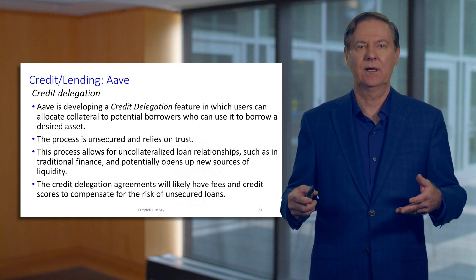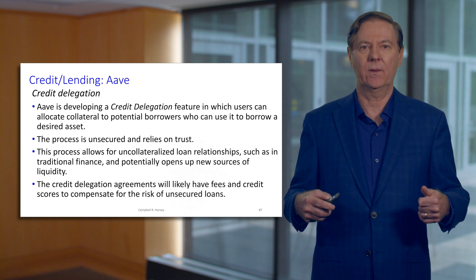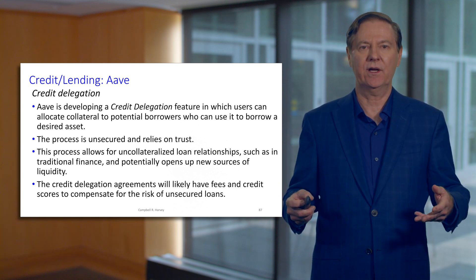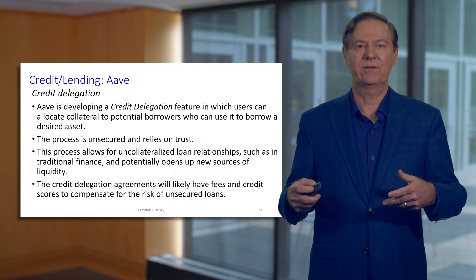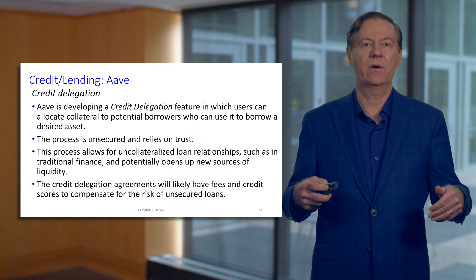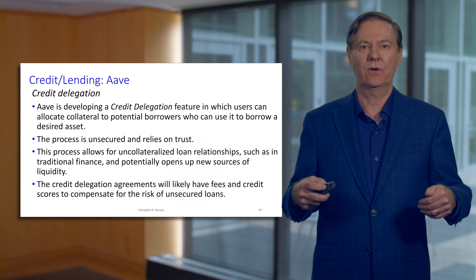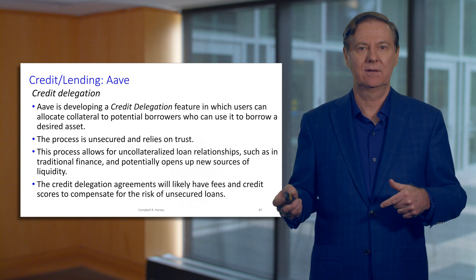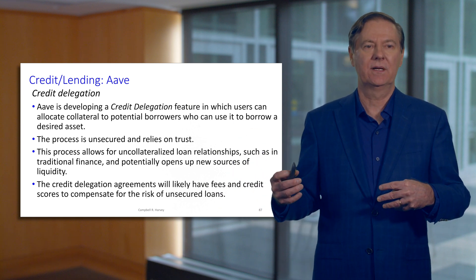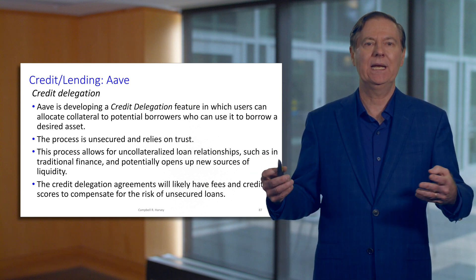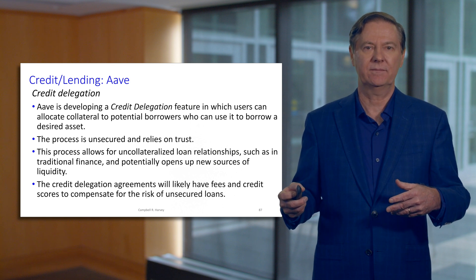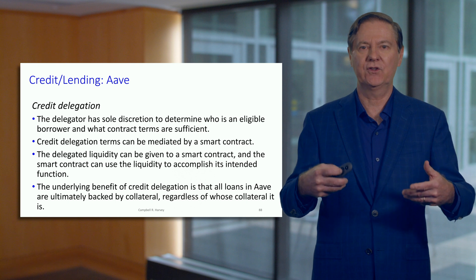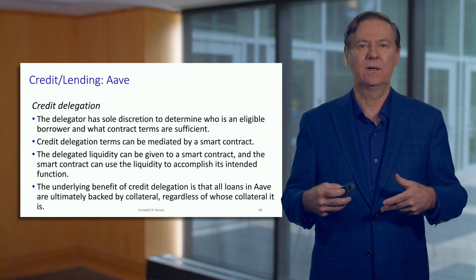Everything in decentralized finance has involved fully collateralized or over-collateralized borrowing. The idea in Aave is that we can retain over-collateralization, but enable a possibility where somebody effectively provides the collateral for an uncollateralized borrower. This happens outside of the Ethereum blockchain and requires an element of trust — you essentially know the person you're delegating to.